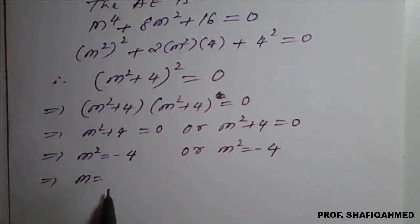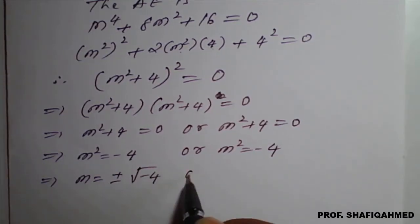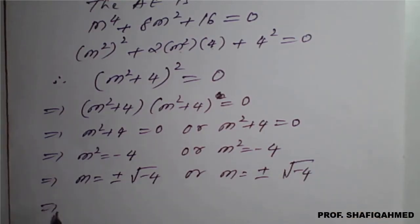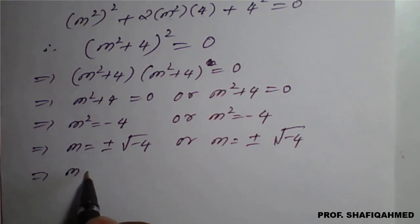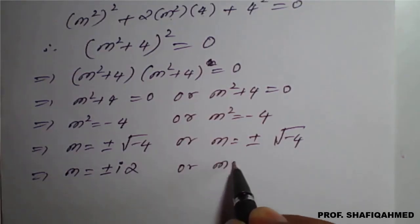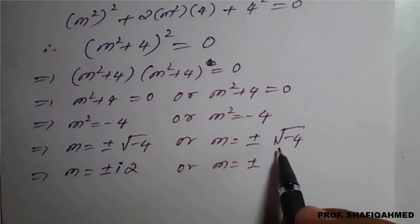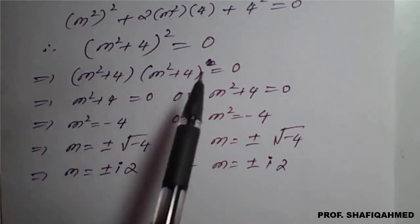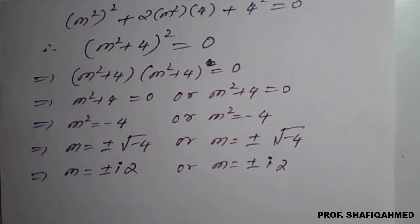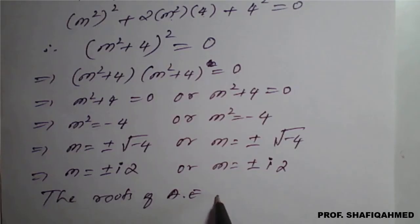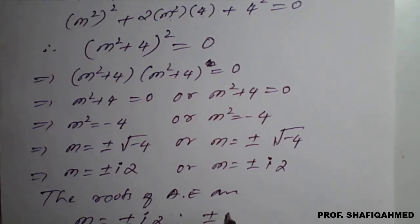m = ±√(−4): the negative sign gives i and √4 = 2, so m = ±2i. Similarly from the other factor m = ±2i. You can see there are 1, 2, 3, 4 total roots, consistent with a 4th-order equation. Therefore the roots of the auxiliary equation are m = ±2i and ±2i.